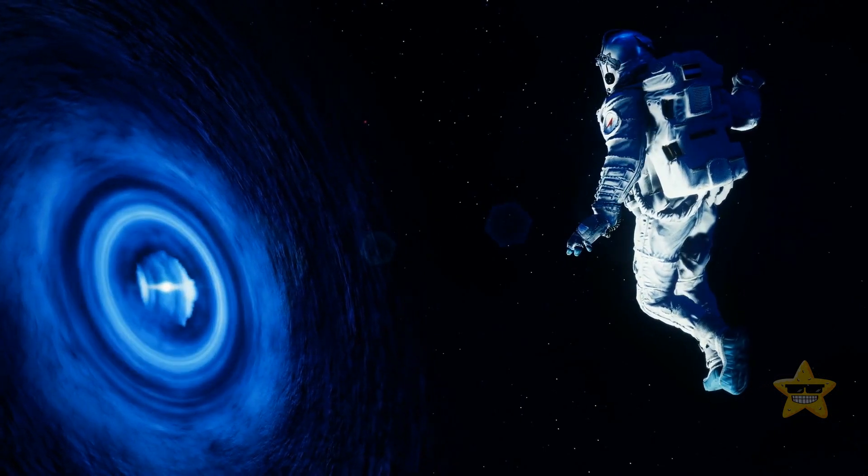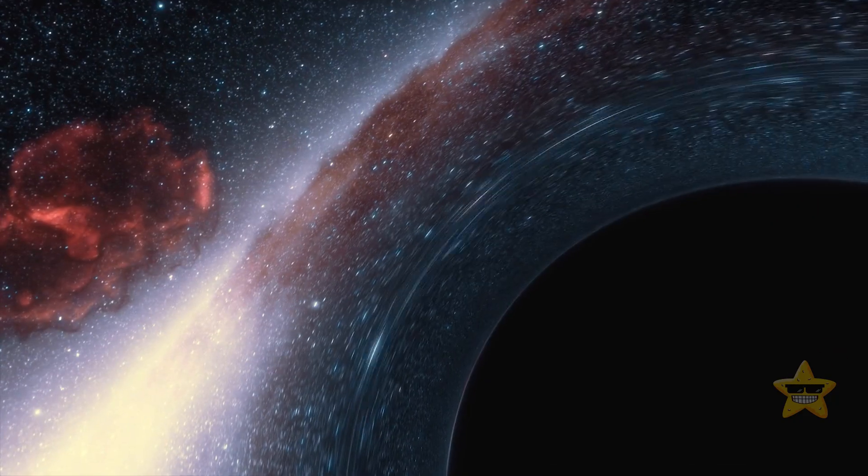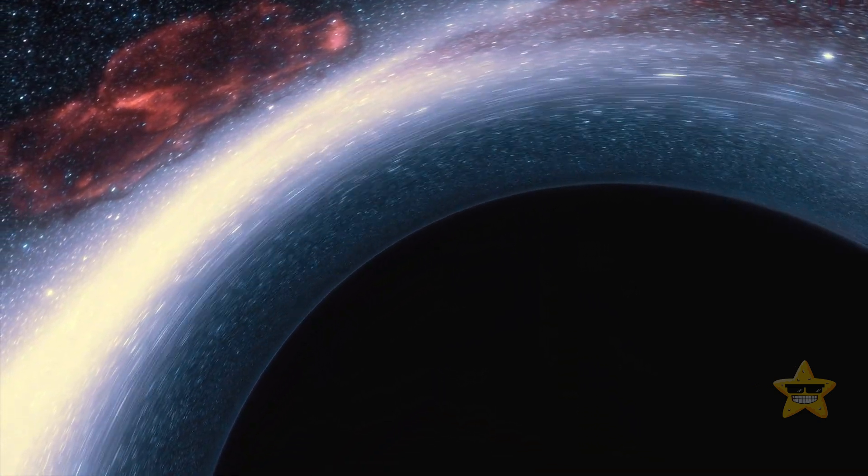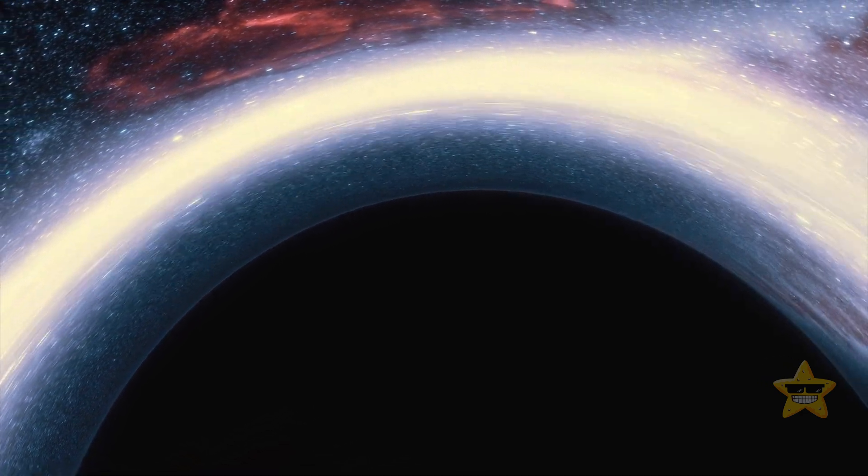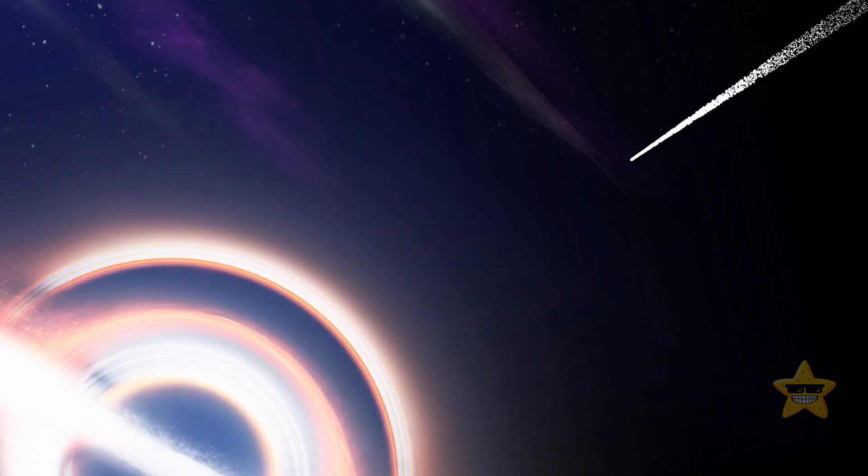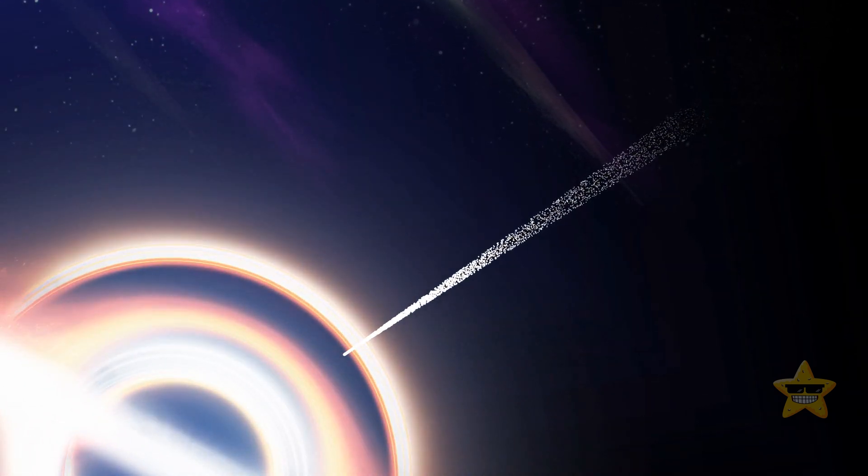An object entering a black hole is instantly transformed. From the outside, it would seem as if the object starts moving more slowly because time distorts near the event horizon of a black hole. From the perspective of the object falling into this space monster, it would take an infinite amount of time for it to become a part of the black hole. When it happens, its mass will be added to that of the black hole.